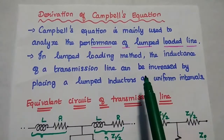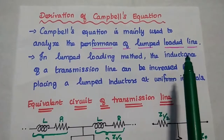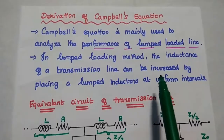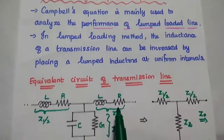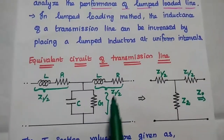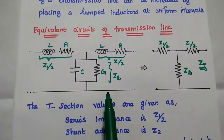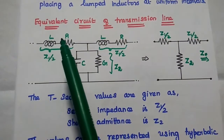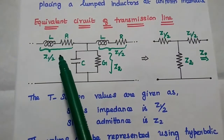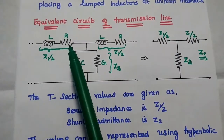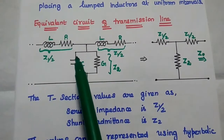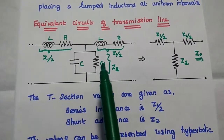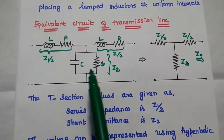Here we are going to increase the inductance value in order to achieve the distortionless condition. This is the general equivalent circuit of the transmission line. The series impedance is the combination of inductance and resistance. The shunt impedance is the combination of capacitance and conductance in parallel.